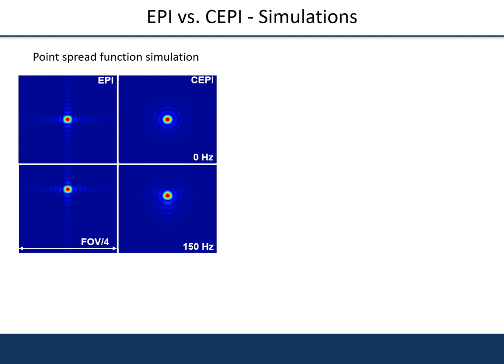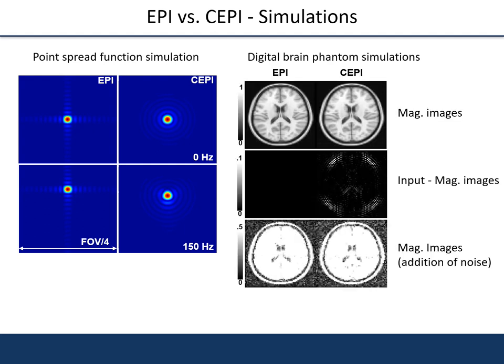We tested the CEPI trajectory in point spread function and SNR simulations to understand the effect that the reduced K-space sampling would have on image quality. Point spread functions are shown for the EPI and the CEPI on resonance and with an offset of 150 Hz. The major difference between the two maps can be seen in a diagonal direction, which are also the ones in which the sampling has changed the most. The changes in the point spread function reflect the change towards a more circular symmetry of the CEPI sampling. Brain phantom simulations show that the major effects on the images are predominantly in the diagonal direction as well.